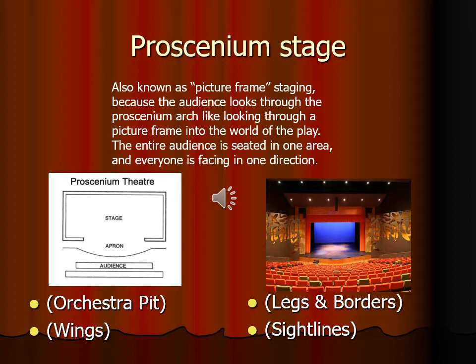Number two: what effect does this space have on scenery? Most proscenium stages, having an orchestra pit, legs and borders to control sight lines, and a fly rail system, offer lots of scenic potential — you can put big sets on stage. Number three: how does the space affect scene changes? Because you have a larger stage with more backstage storage and a fly rail system, you can close the main drape to hide your scene changes and use the element of surprise when you open the curtain.